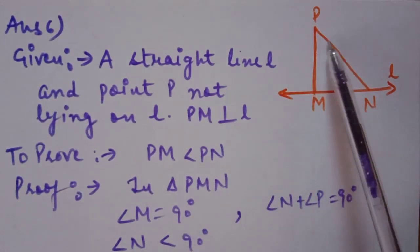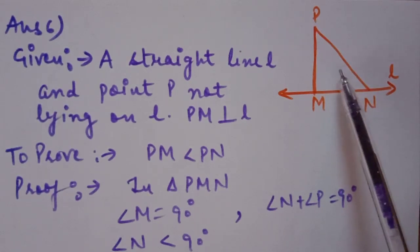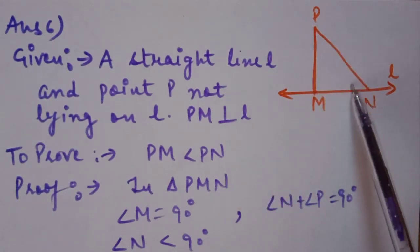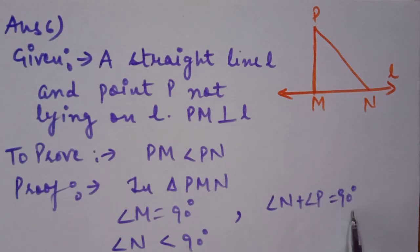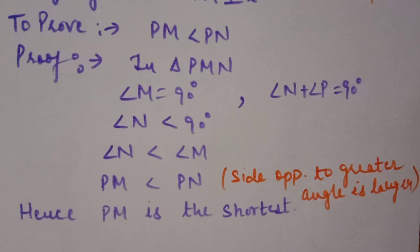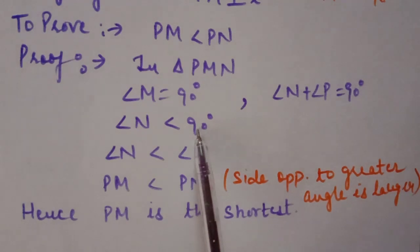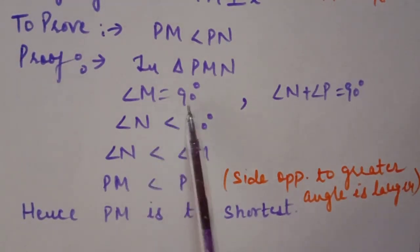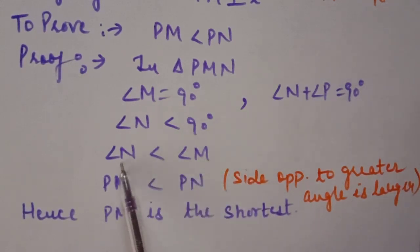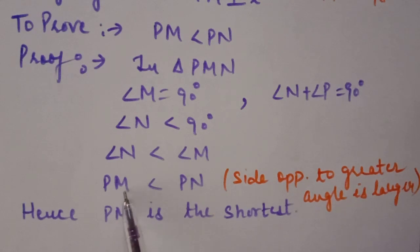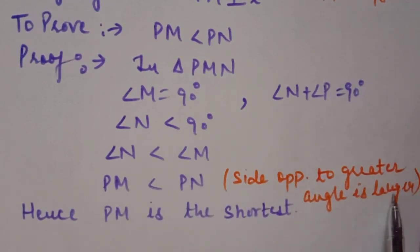By the angle sum property, the sum of all three angles in a triangle is 180 degrees. Since angle M is 90 degrees, the sum of the remaining two angles N and P is also 90 degrees, so individually each is less than 90 degrees. Therefore angle N is less than angle M. The side opposite to angle N is PM and the side opposite to angle M is PN. So PM is less than PN. Reason: the side opposite to the greater angle is longer. Hence PM is the shortest distance.